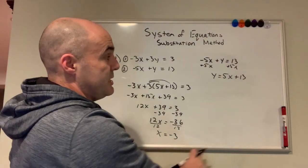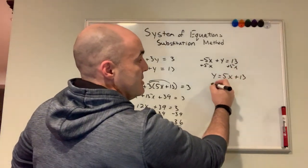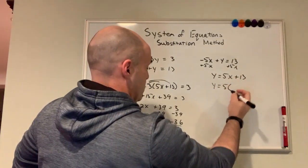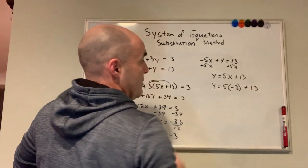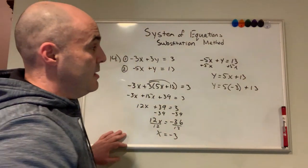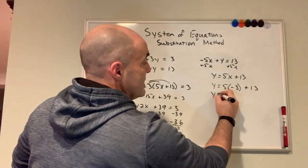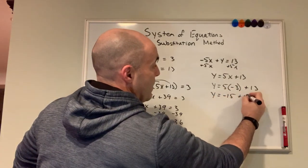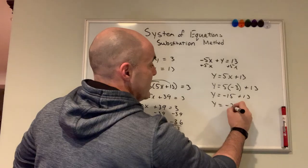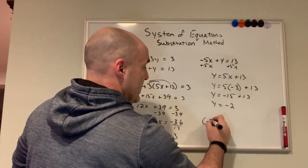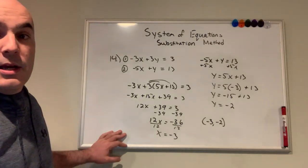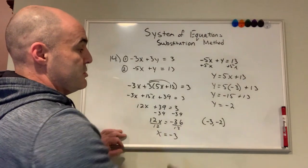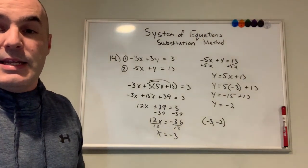Now that we know what x is, we're going to take it back over here. Sub in. For x is now negative 3. 5 times negative 3 is negative 15. Negative 15 plus 13 is negative 2. So negative 3, negative 2 is the point where these two lines intersect. Since that's our solution, it is consistent, independent.